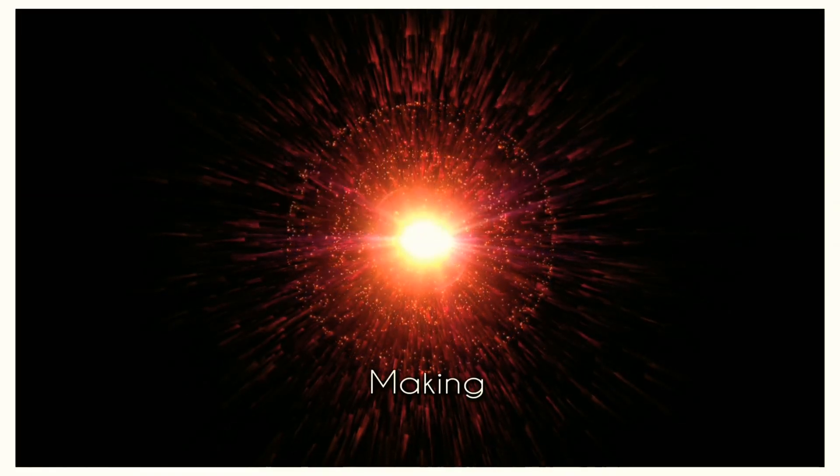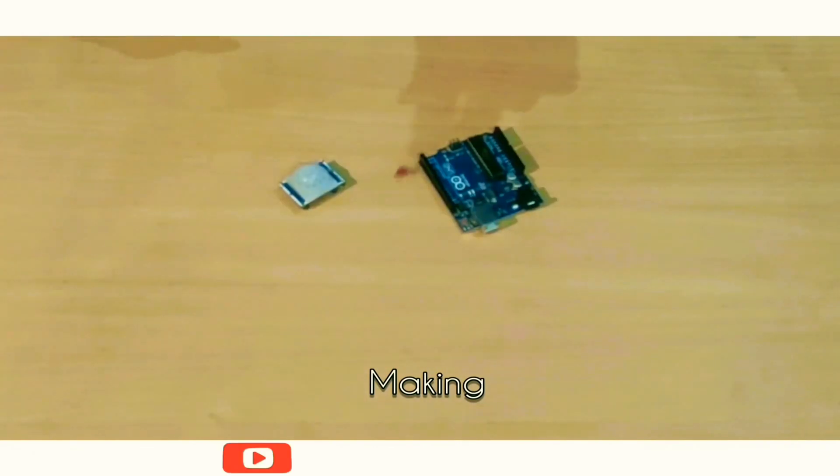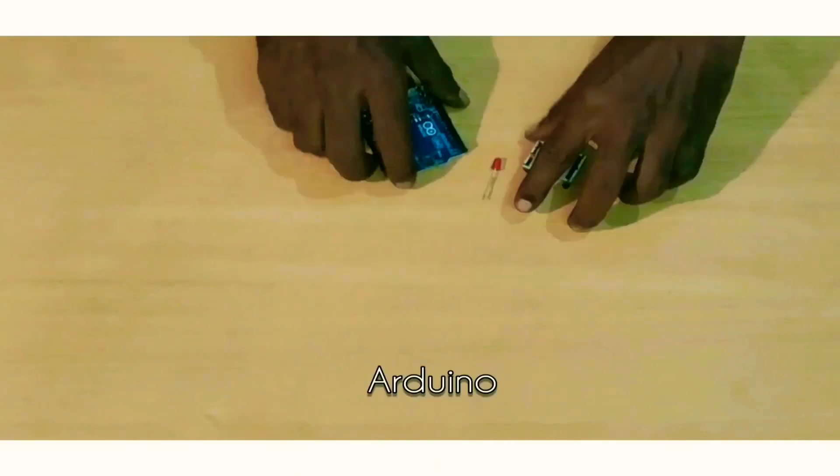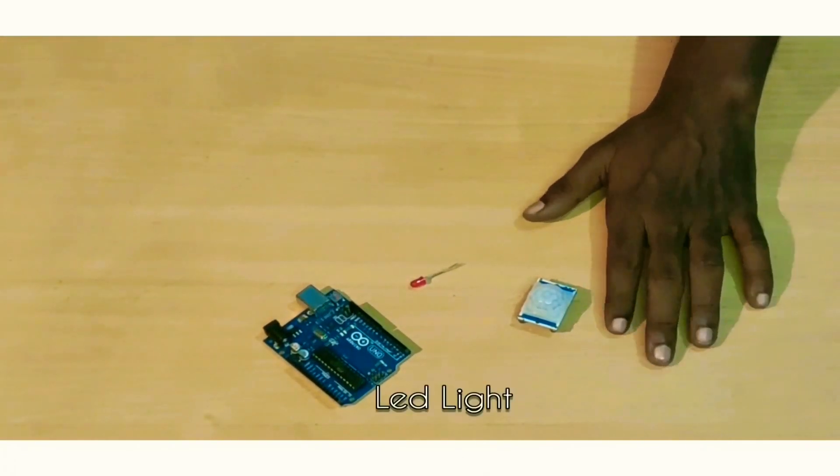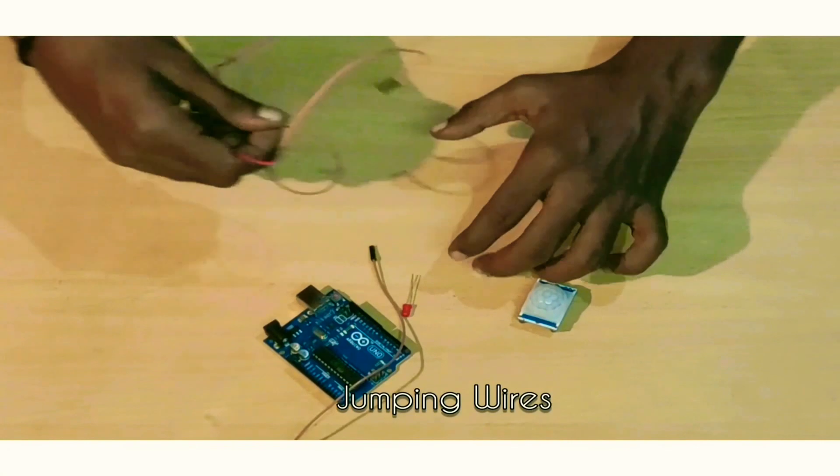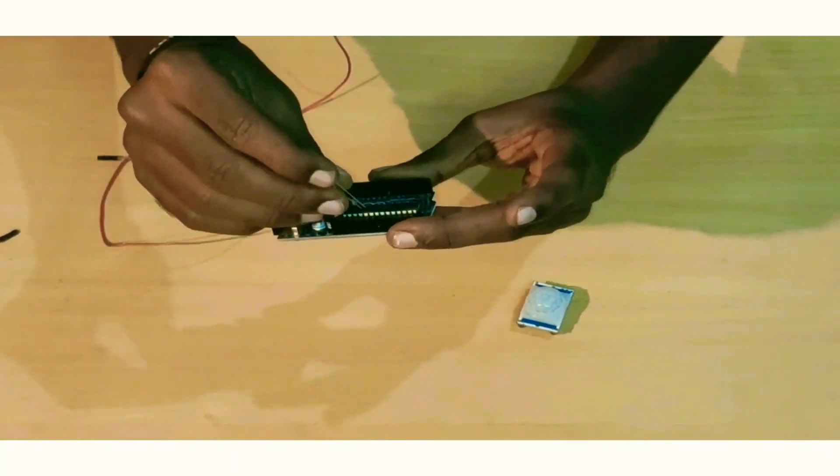This is a PIR sensor. What's the PIR sensor? PIR sensor will be connected to Arduino. Let's see. So we are going to use a PIR sensor, an LED, an indicator, and some jumper wires.